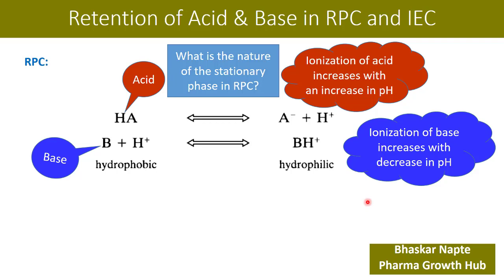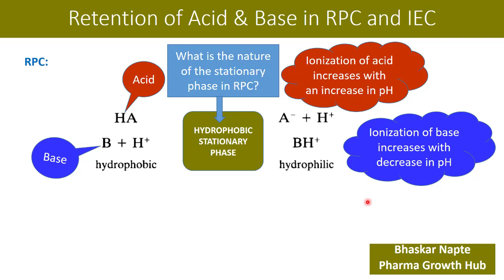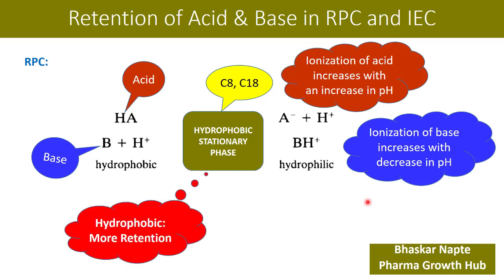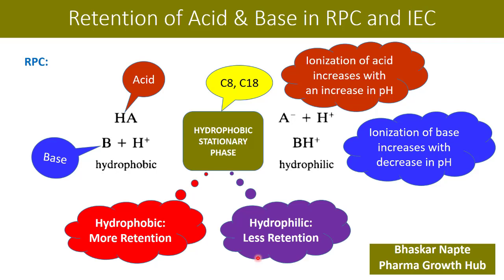The stationary phase in reverse phase chromatography is hydrophobic — like C8 or C18. Applying the 'like attracts like' rule: the hydrophobic acid or hydrophobic base will have more retention on the hydrophobic stationary phase. Conversely, hydrophilic compounds — such as ionized acid or protonated base — will have lesser retention time, because the hydrophobic stationary phase has less interaction with a hydrophilic compound.